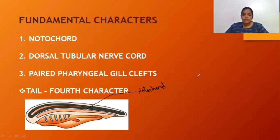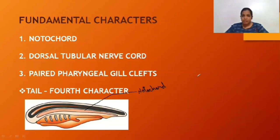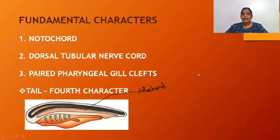The notochord is replaced by the vertebral column around the spinal cord, and it is replaced by the cranium — the brain box — around the brain. In case of vertebrate members, they do not have notochord in their adult stage. They just have notochord during the embryonic stage. Like we human beings — when we become adult, the notochord is replaced by the vertebral column and cranium.